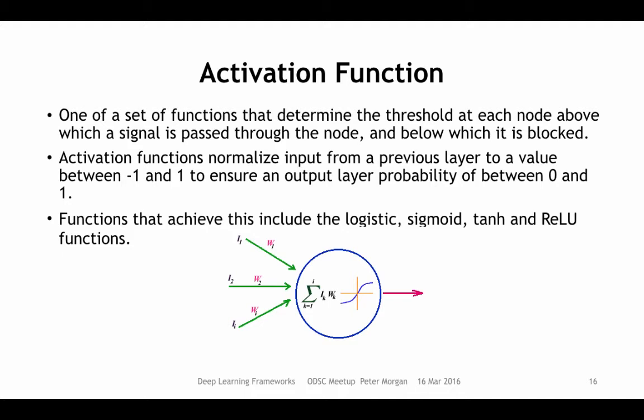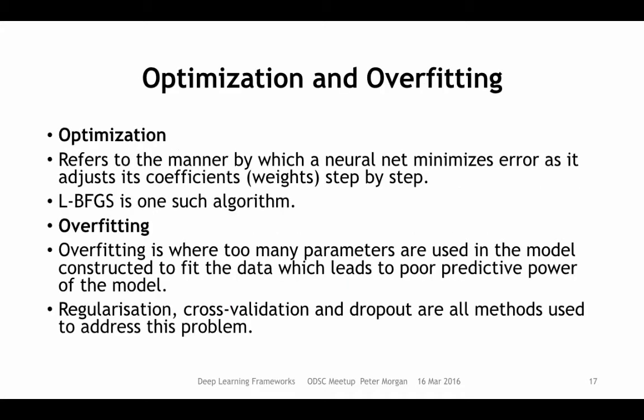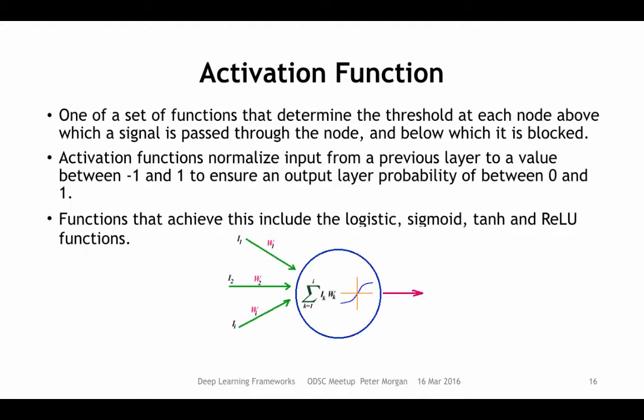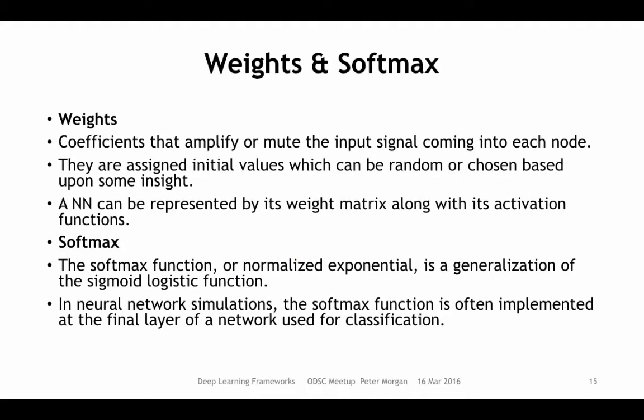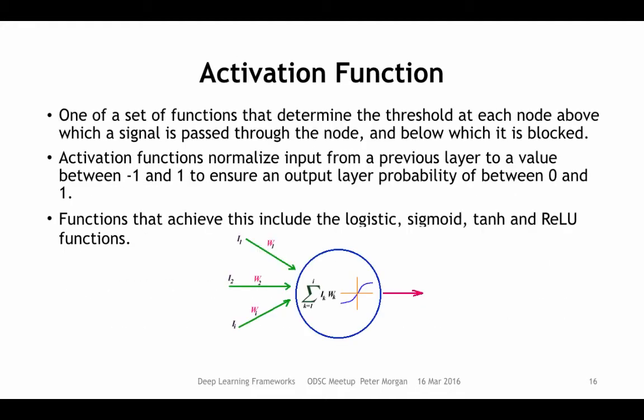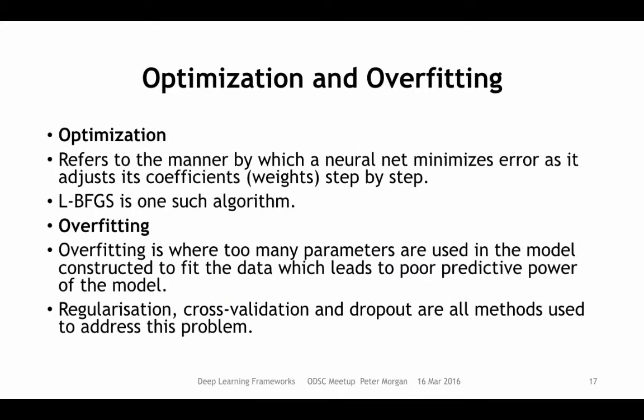The softmax function is simply the activation function at the last — output — layer. It's the same shape and we give it a special name: softmax, or normalized exponential. It's just what we call the activation function on the output layer.